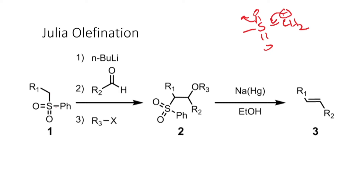In this reaction, we take the sulfone compound and react it with N-butyllithium followed by reaction with an aldehyde. When you see this reaction, you find that a carbon-carbon bond is formed between this carbon and this carbon — this is basically a straightforward addition to a carbonyl compound by a carbon-based nucleophile. The only difference in Julia olefination is that there are a couple more steps: alkylation on this oxygen, followed by reaction with sodium amalgam and ethanol. We need to understand the mechanism of this process.